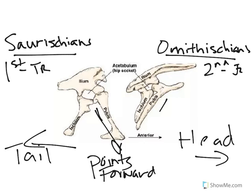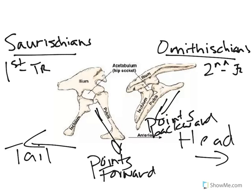In an Ornithischian dinosaur, the pubis has rotated and the pubis points backward. So it's a pretty easy difference there.